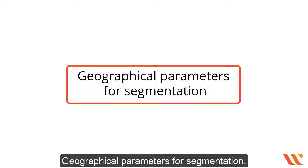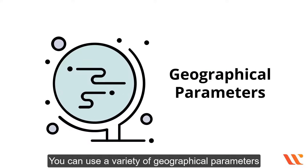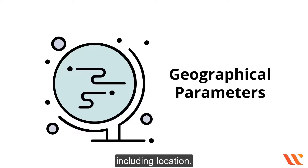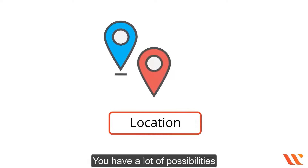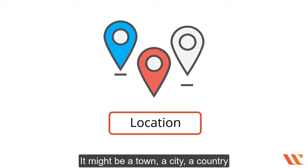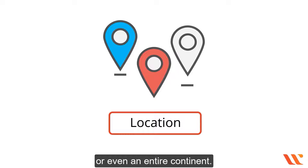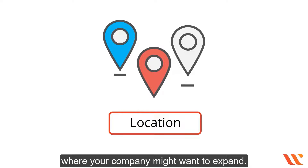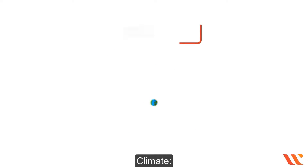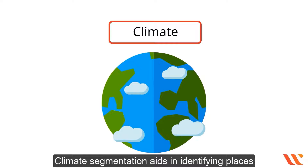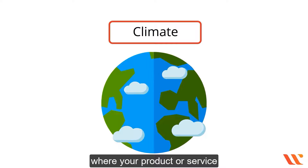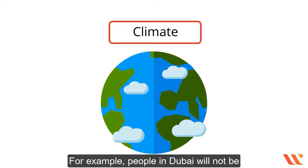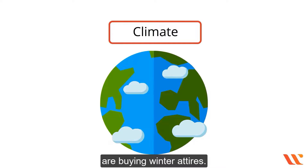Geographical parameters for segmentation include location — you can segment by town, city, country, or even an entire continent, and this can also be used to find a new geographic region where your company might want to expand. Climate segmentation aids in identifying places where your product or service is appropriate for the climate. For example, people in Dubai will not be buying winter tires.